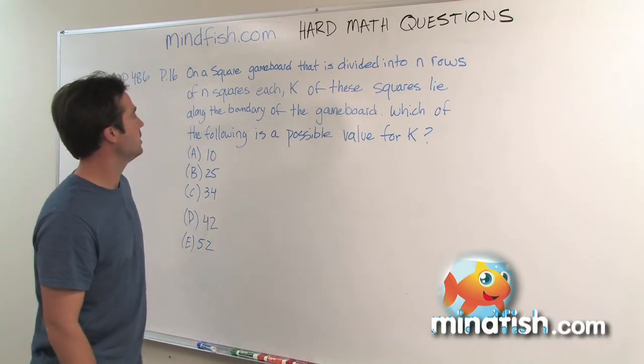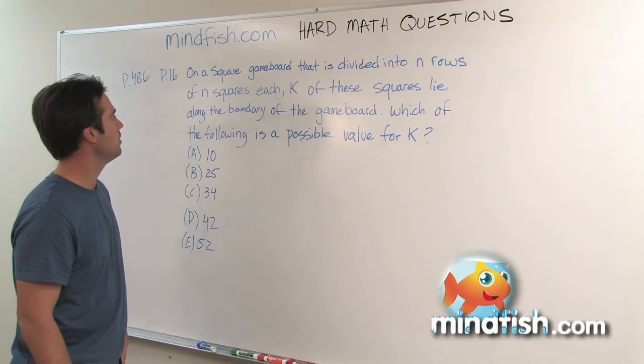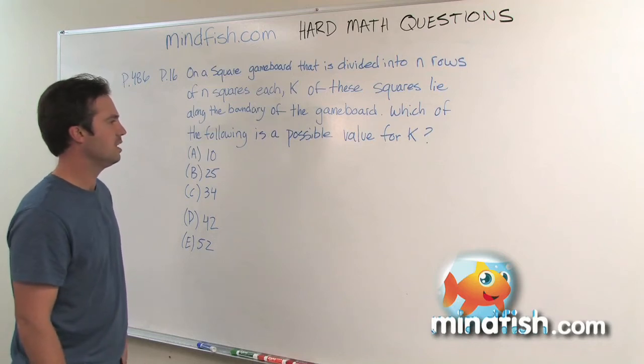Now if we look at the question, it says on a square game board that is divided into n rows of n squares each, k of these squares lie along the boundary of the game board. Which of the following is a possible value for k?